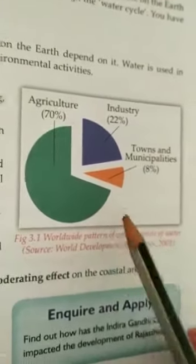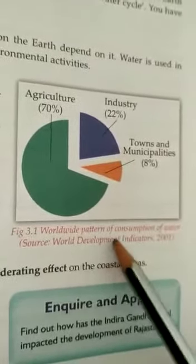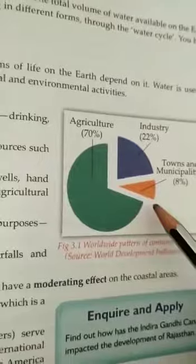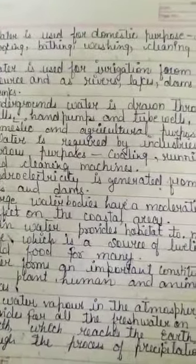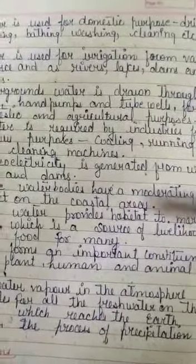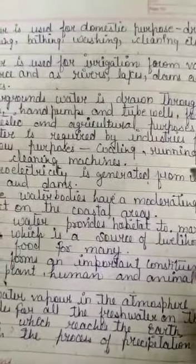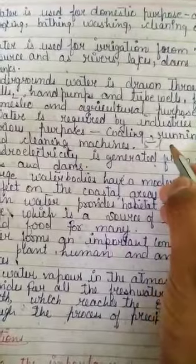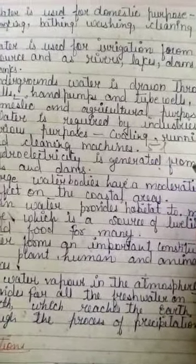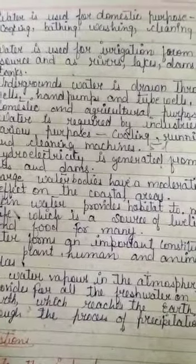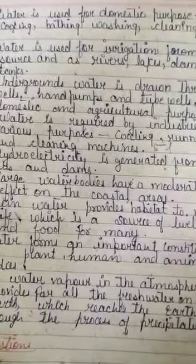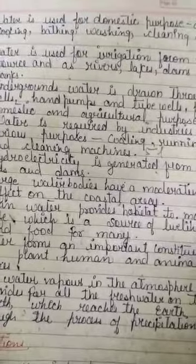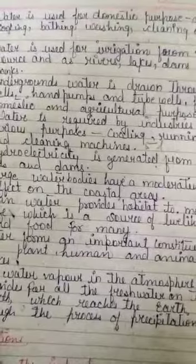Look at this graph. This shows the worldwide pattern of consumption of water. Source: World Development Indicator 2001. The categories shown are Agriculture, Industry, and Town and Municipalities. Do you know what our average daily water usage is? We use water not just to drink, bathe or wash clothes — we use it through the products we consume too. An average person needs 5 liters of water to drink daily to survive in a moderate climate with little activity. An average American uses 380 to 660 liters of water per day. Globally, we consume around 4 trillion cubic liters of fresh water a year. Agriculture alone can consume 75 to 90% of a region's available fresh water.